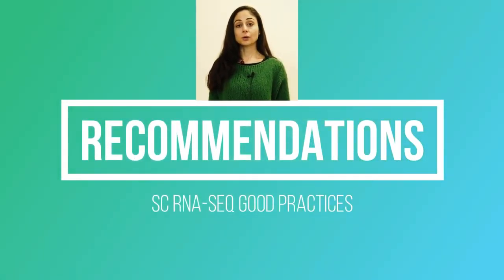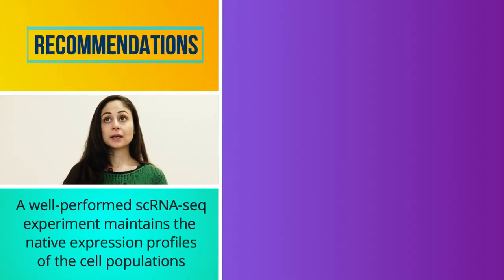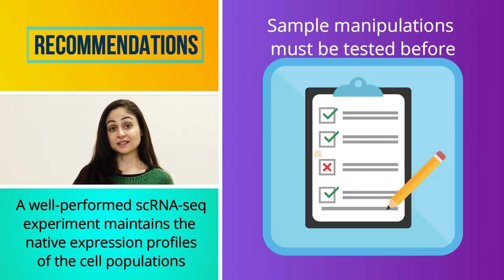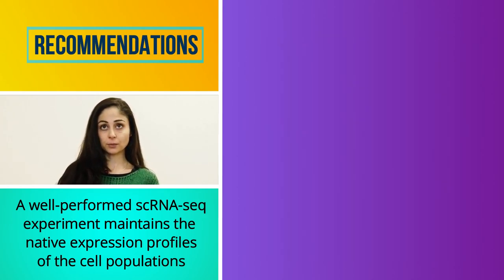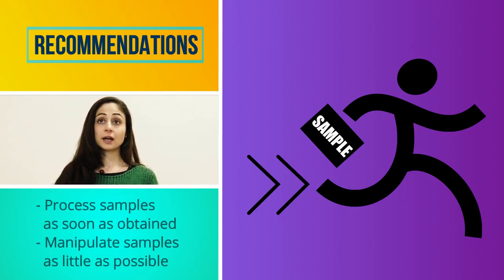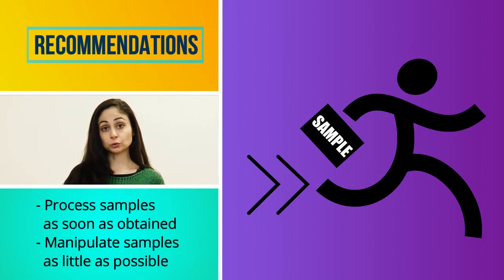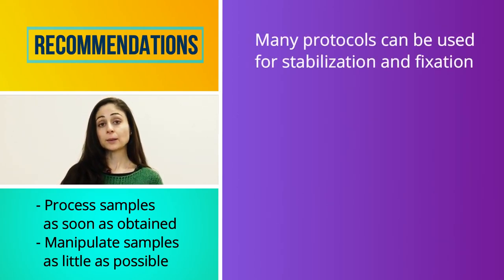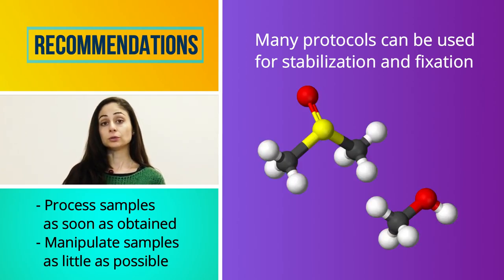Let's now review some practical recommendations for single-cell RNA sequencing. A well-performed experiment maintains the native expression profile, so it is essential to handle samples carefully. Each tissue could have specific manipulation requirements that must be tested before starting the actual single-cell experiment. Ideally, samples should be processed as soon as they are obtained and manipulated as little as possible to avoid cell death — which can lead to loss of some subpopulations and high amounts of ambient RNA, causing artefacts. There are many protocols available describing stabilization and fixation methods based on, for example, dimethyl sulfoxide or methanol, to overcome this issue.